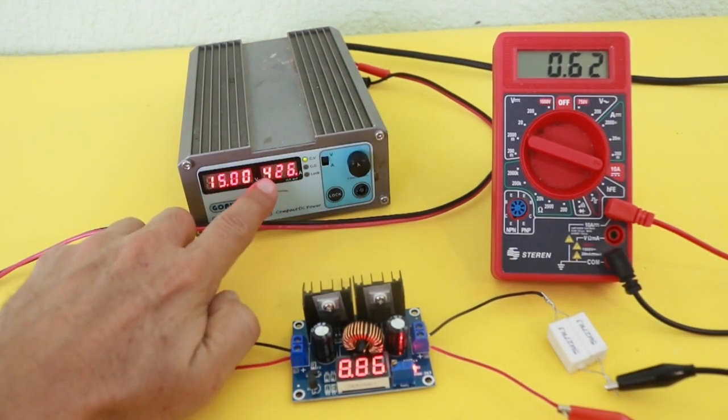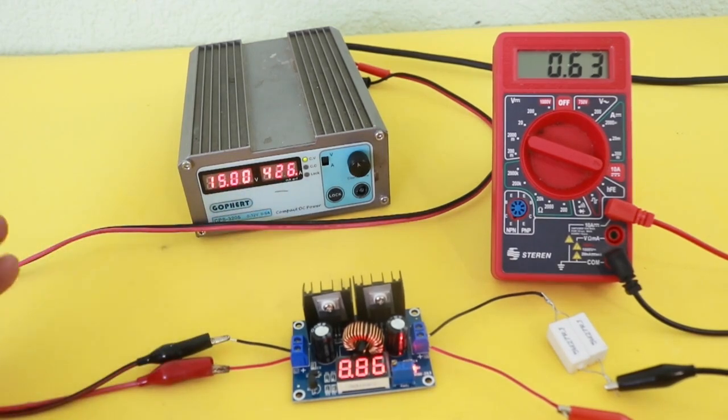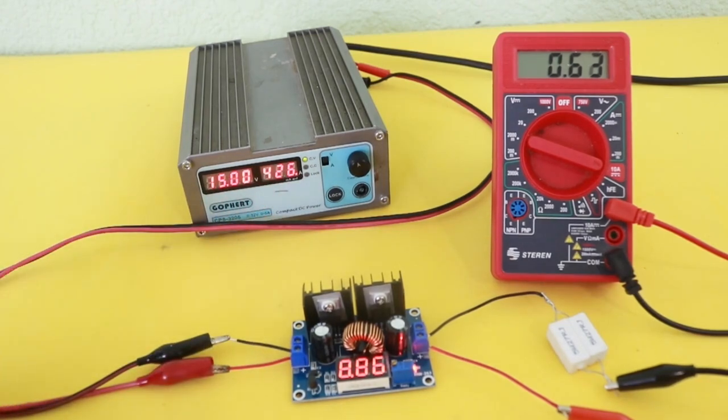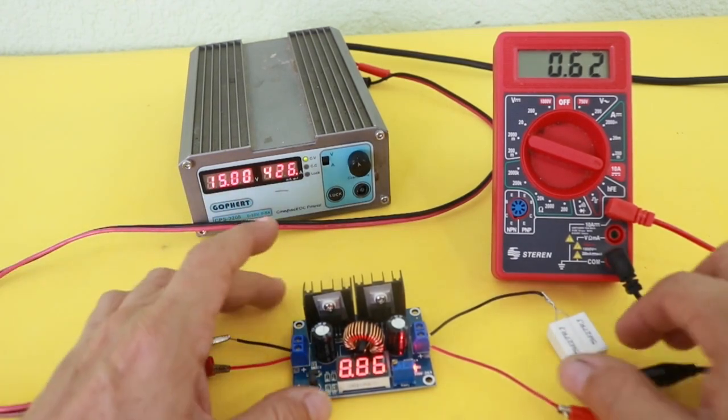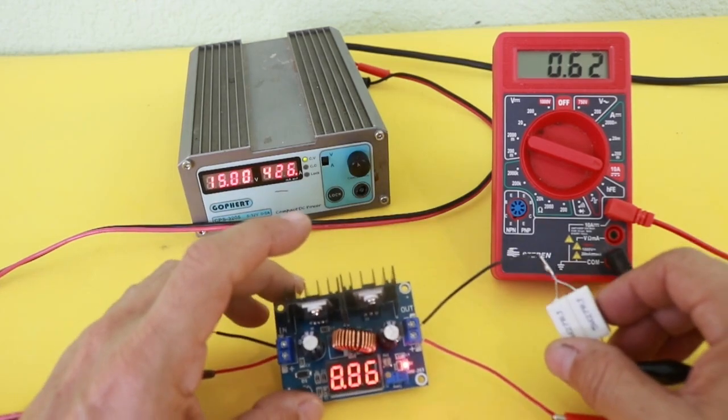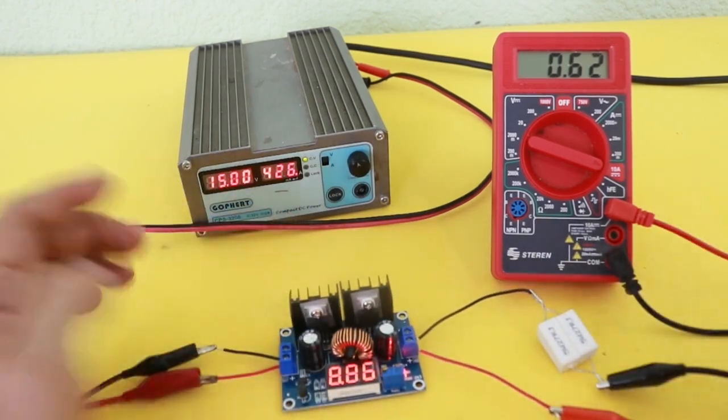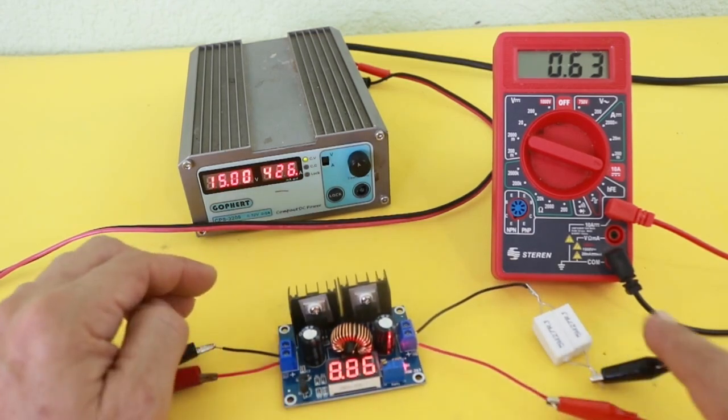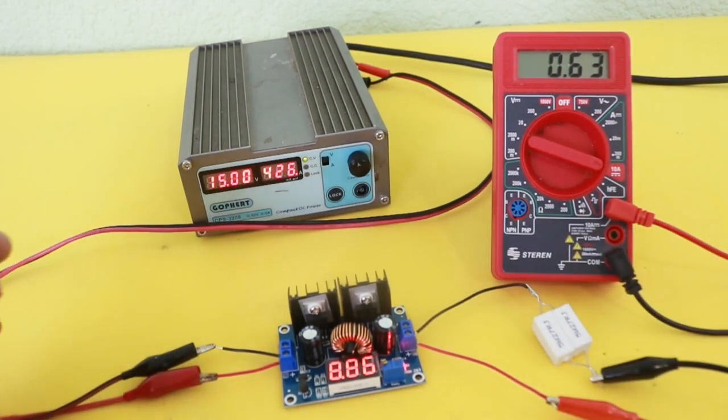For example, 15 volts and 426 milliamps at the input. The product of these two values is the input power. At the output I have connected this power resistor as a load, and the output voltage is that given by the module and I am measuring the current with the multimeter.